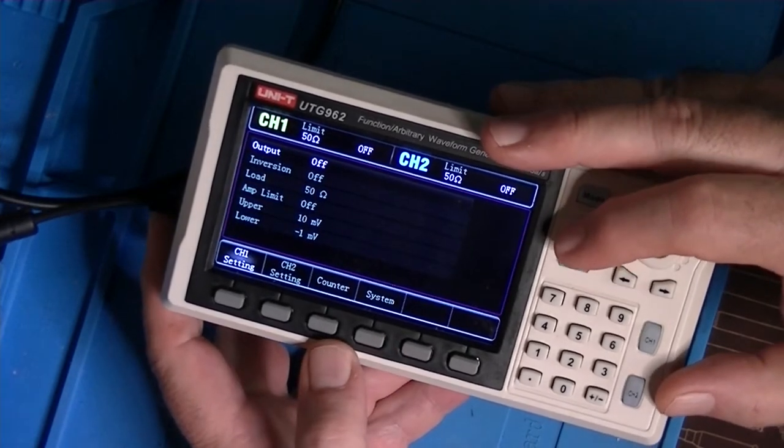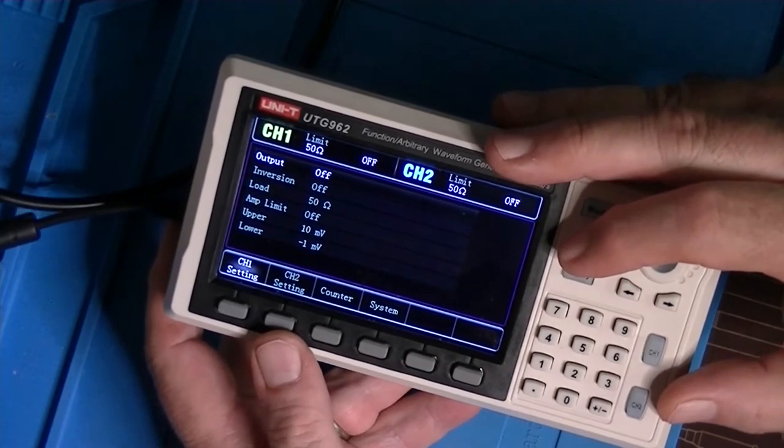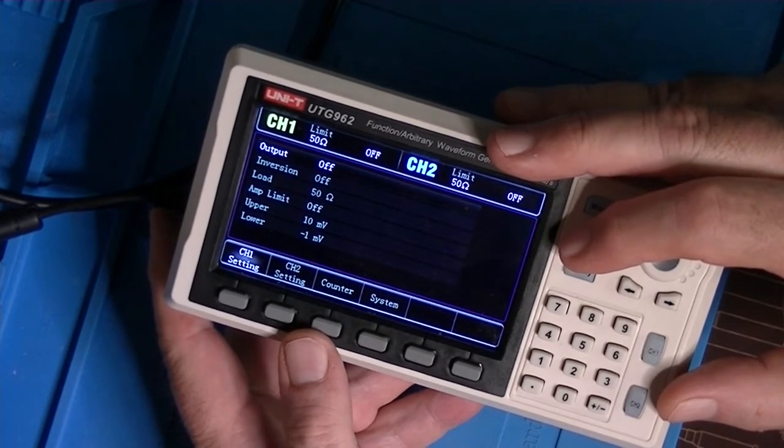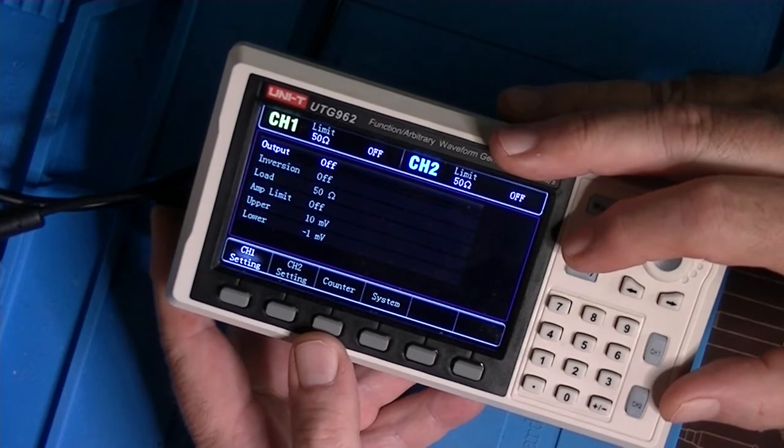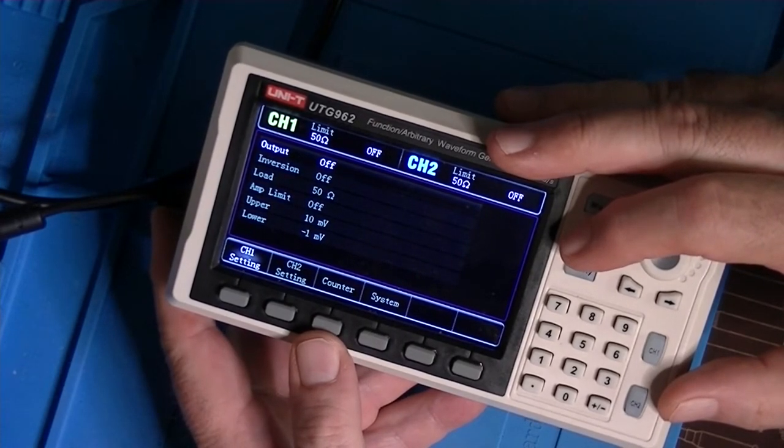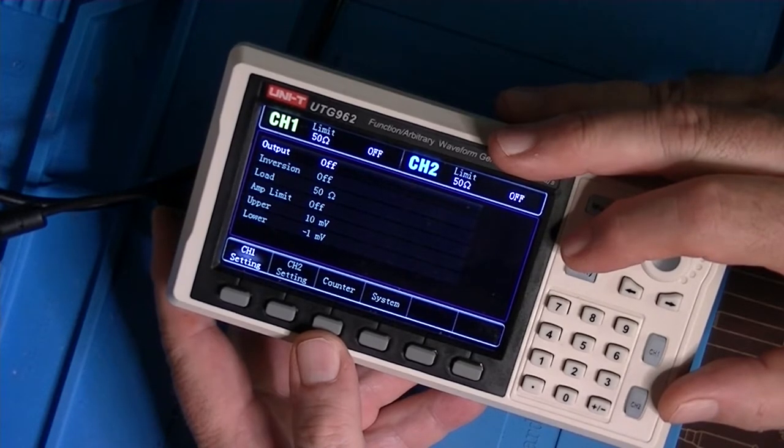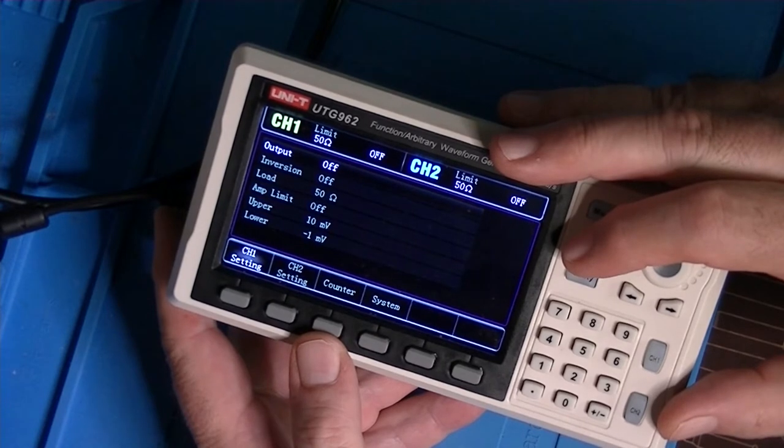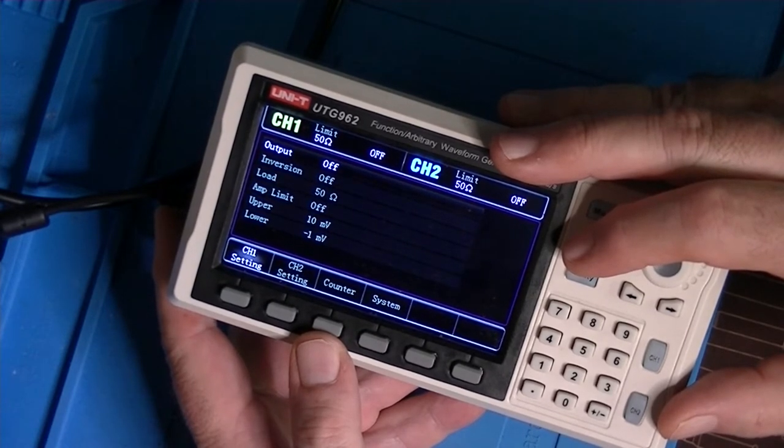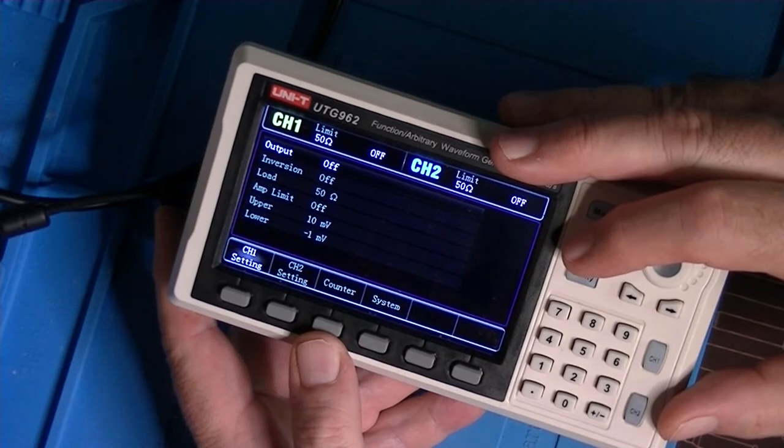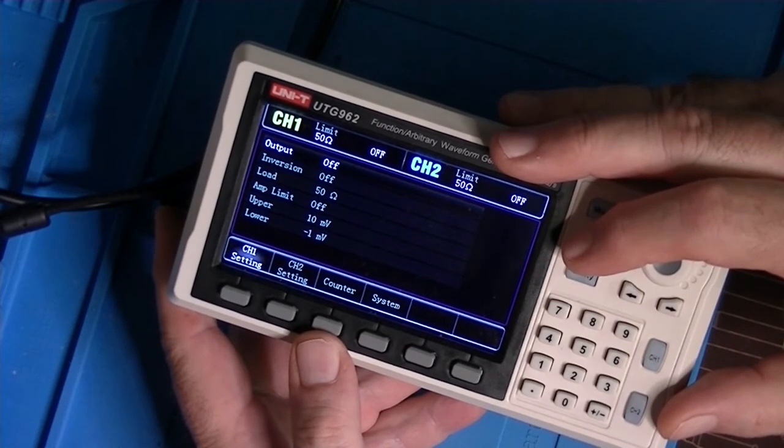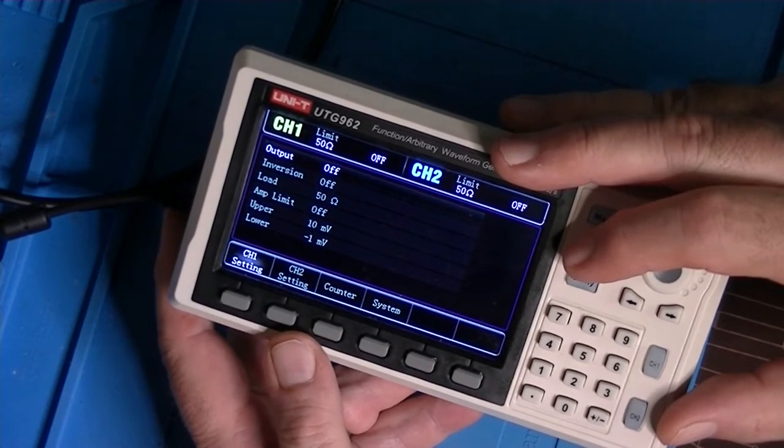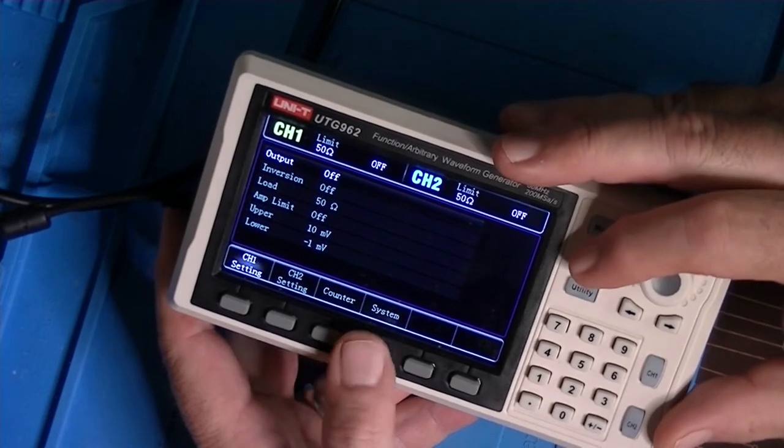The utility button takes us to the settings for channel 1 and channel 2. Whether we want to invert or what our load is. Do we have an amp limit on this? So, this runs off of 5 volts DC. We can set our amperage limit so that we don't potentially smoke any very sensitive circuits with too much current. You know, if you put this on to something that's not expecting, but a couple hundred milliamps and you blast it with a half an amp, that could probably be a problem. And so, our upper and lower voltage thresholds and so on and so forth. That's all in utility.